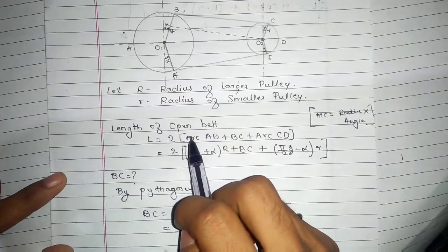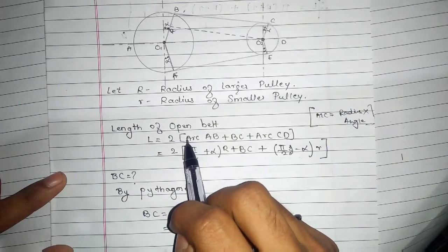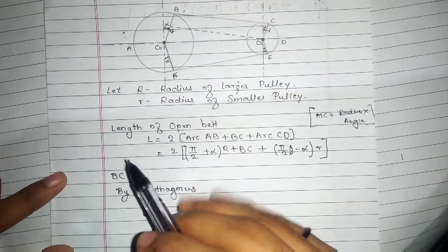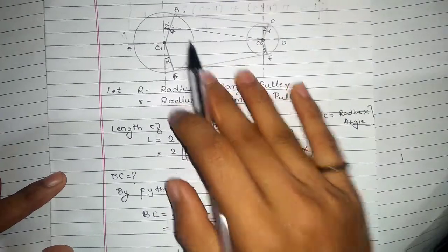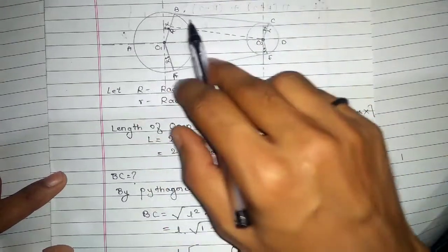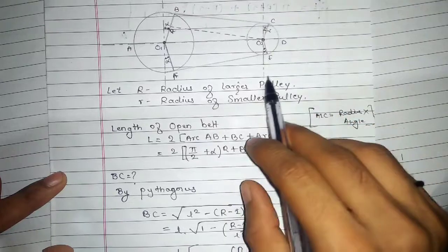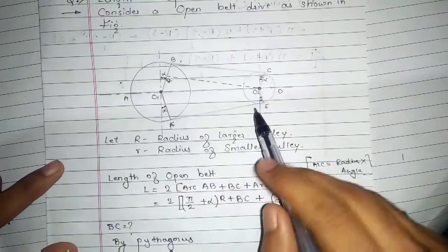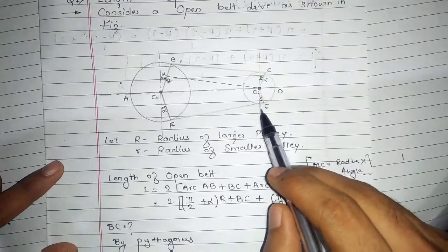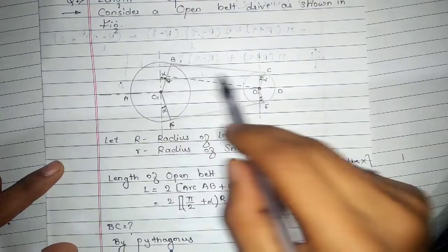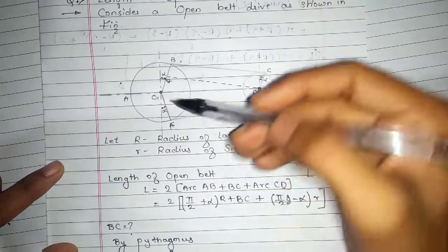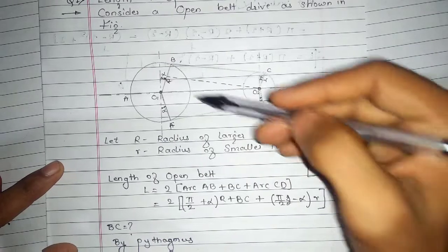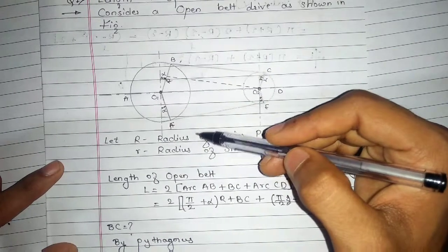We need to find the length of the open belt. I have to multiply by 2 to get the value of every point — A, B, C, D, E, F. So if I multiply by 2, I only need to take the values of A, B, C, and D, because if I cut into half it will be symmetric on both sides.